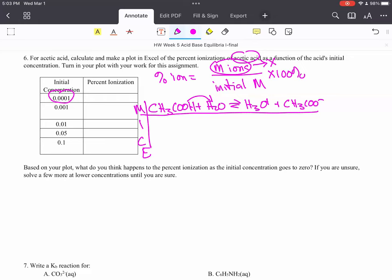And for this ICE table, you're going to use whatever your initial concentrations are. So it's going to be one, two, three, four, five ICE tables.